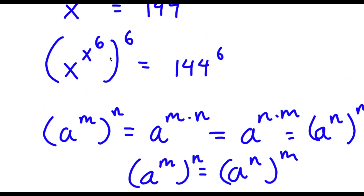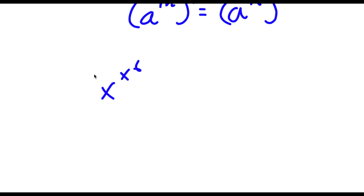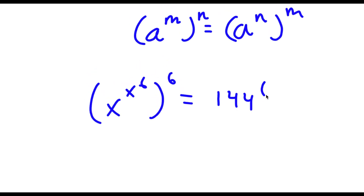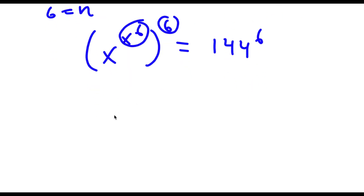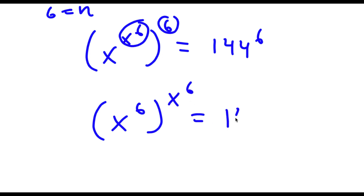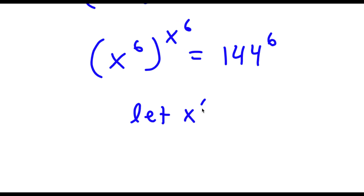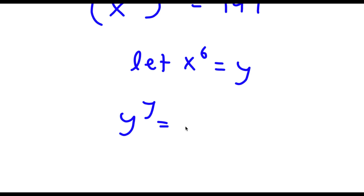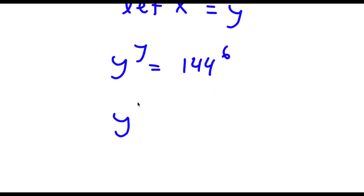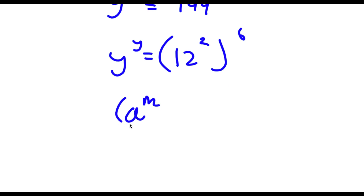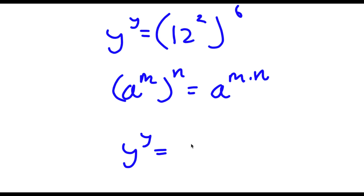So these two are the same thing. In this case I have x to the power of x to the power of 6 to the power of 6, and I can switch these to get x to the power of 6 to the power of x to the power of 6, equals 144 to the power of 6. Now I'm going to let x to the power of 6 equal y, so y to the power of y equals 144 to the power of 6. And 144 is 12 to the power of 2, so I have 12 to the power of 2 to the power of 6, which equals 12 to the power of 12.